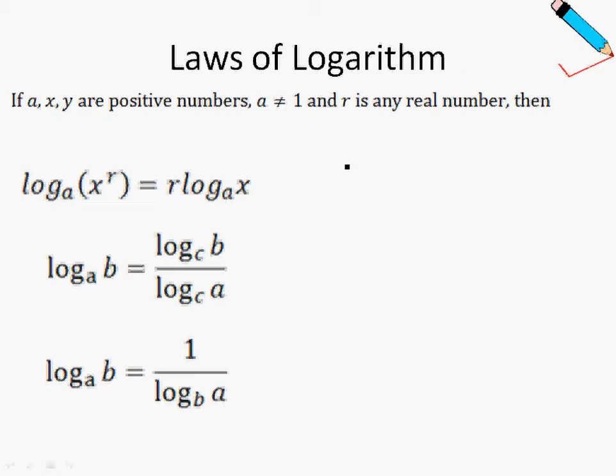The next law, law 6: for example log 2 of 2 to the power of 3 can be broken down to 3 log 2 of 2. The 3 here will go to the front because this 3 is the power of 2. As you can see from the law over here, the r comes to the front of the logarithm.